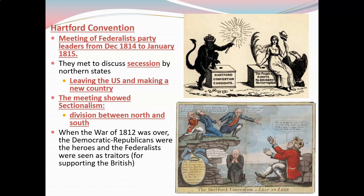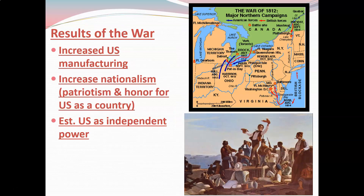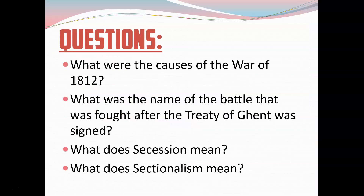Here's the problem: when the War of 1812 ended, the Democratic-Republicans looked like heroes because they won the war, and the Federalists were seen as traitors for supporting the British. They were having this conference, and right as they were getting ready to end it, Andrew Jackson won the Battle of New Orleans and the war was over — making them look like traitors. The results of the war: increased U.S. manufacturing, increased nationalism, patriotism, and honor for the U.S. as a country, and it established the United States as an independent power on the global stage.